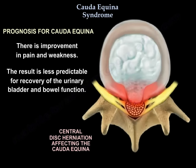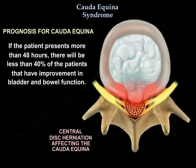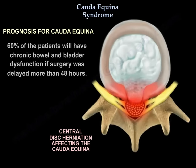The prognosis for Cauda Equina Syndrome includes improvement in pain and weakness. However, recovery of urinary bladder and bowel function is less predictable. If the patient presents more than 48 hours after onset, less than 40% will have improvement in bladder and bowel function, and 60% of patients will have chronic bowel and bladder dysfunction if surgery was delayed more than 48 hours.